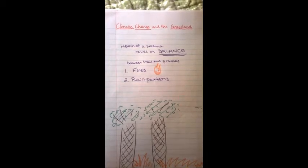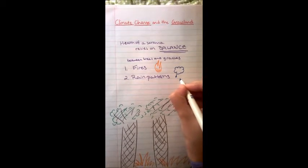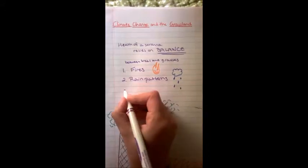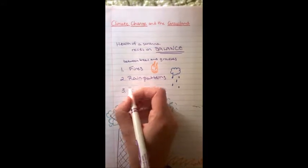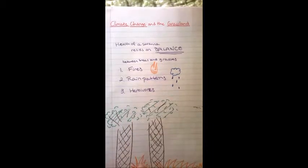Global warming is also projected to affect rain patterns because of warmer oceans, which means trees will be able to grow more easily and reach that fireproof height. Also, large herbivores that live in grasslands are normally able to curb tree growth by keeping it at an acceptable height.